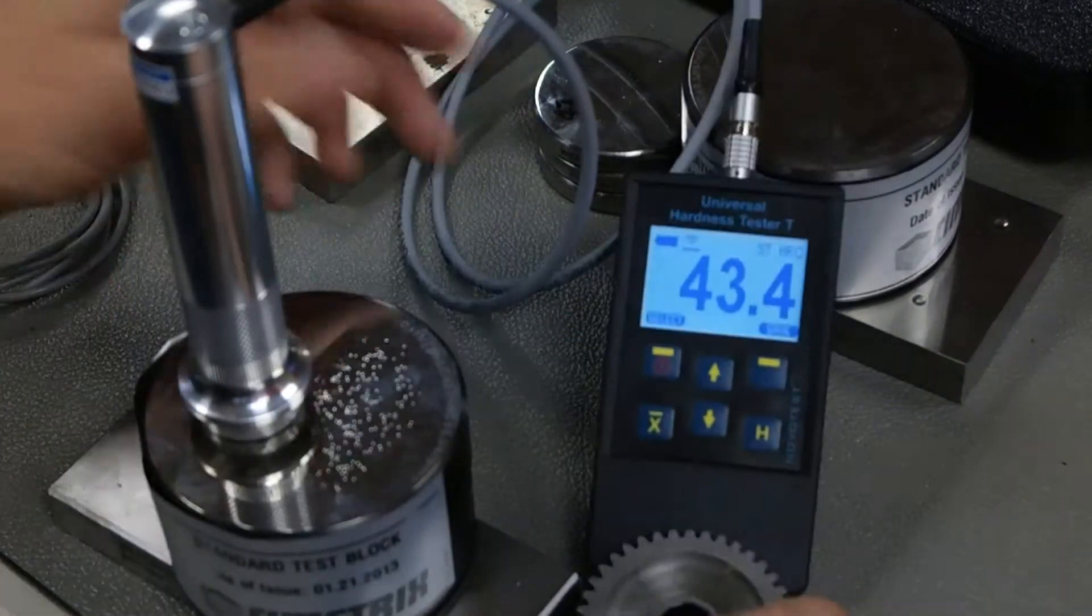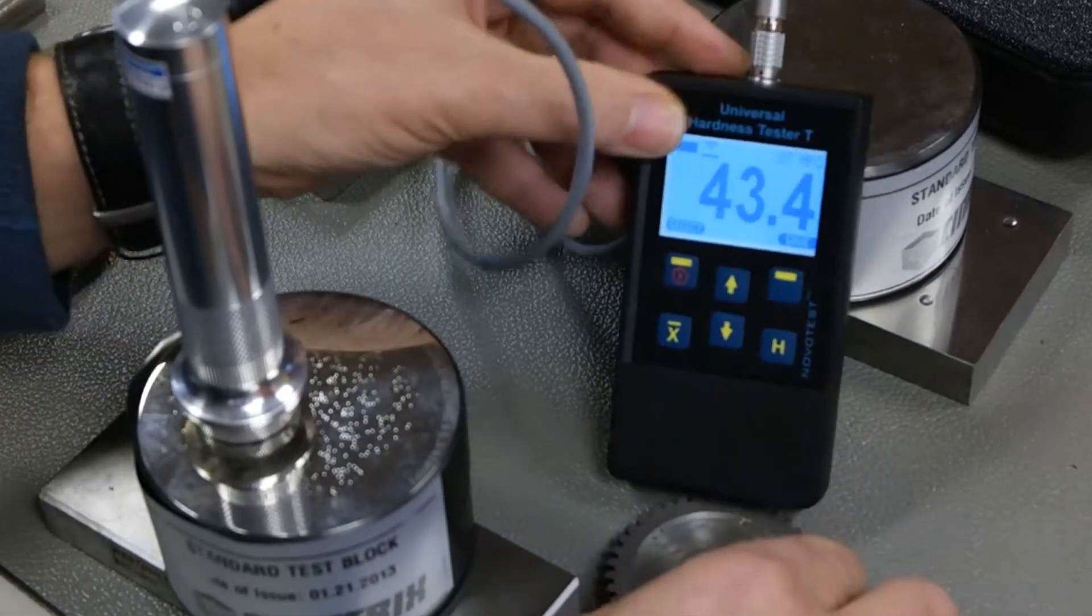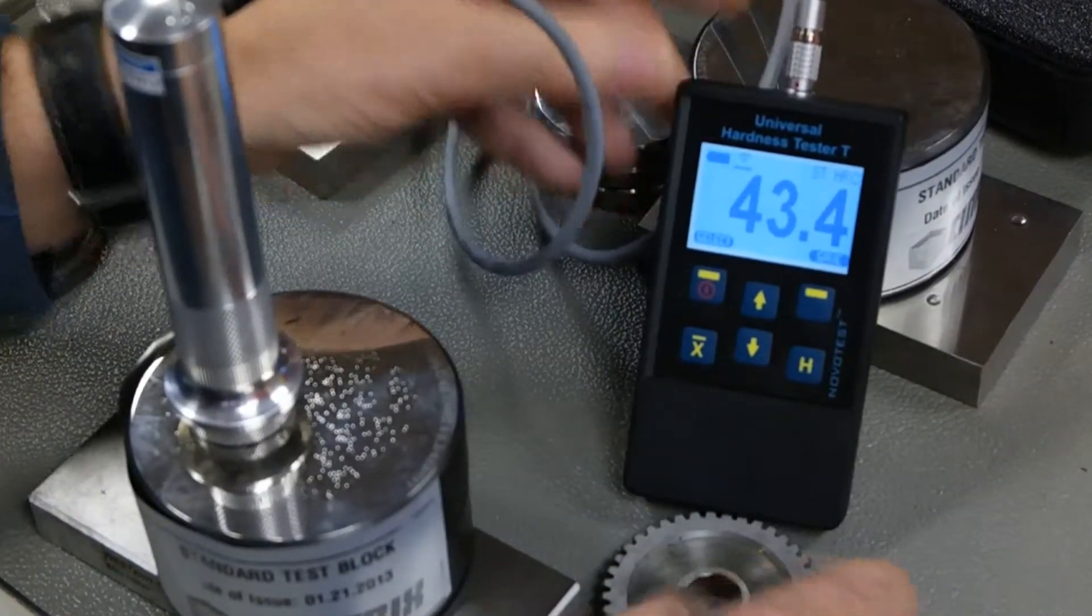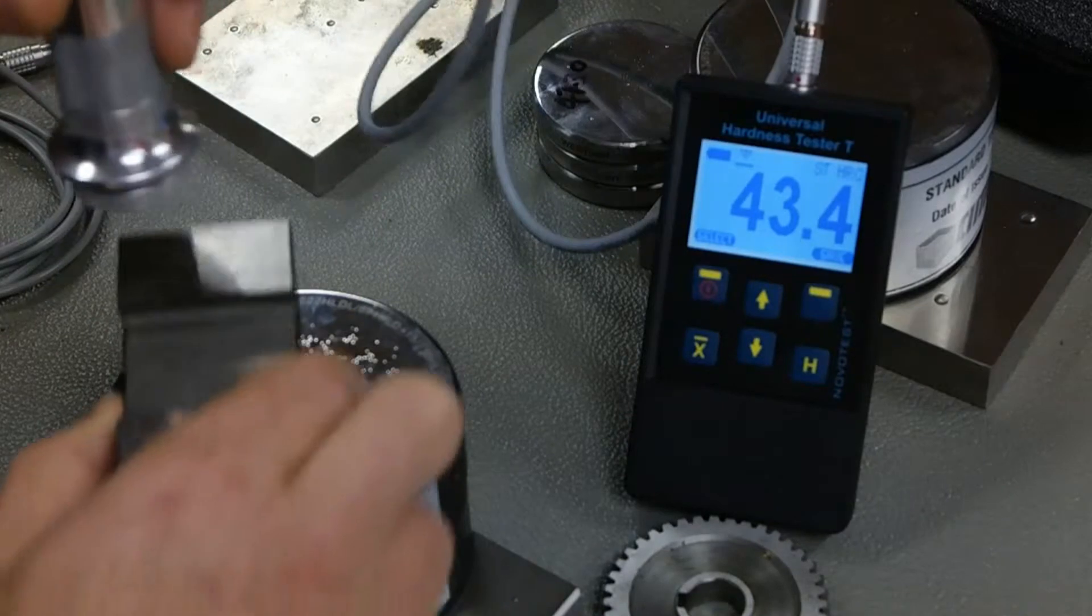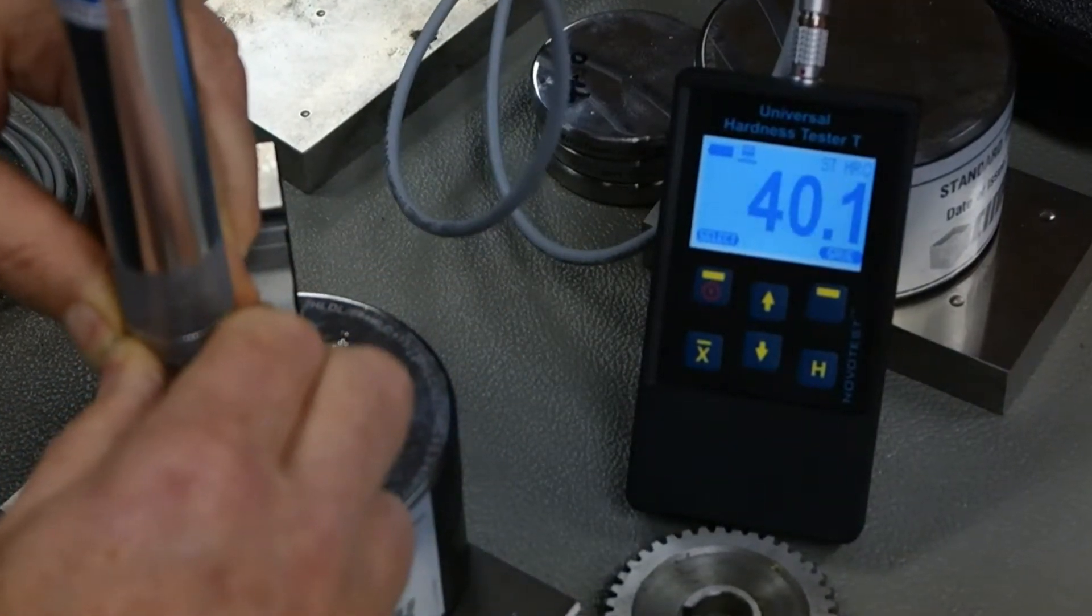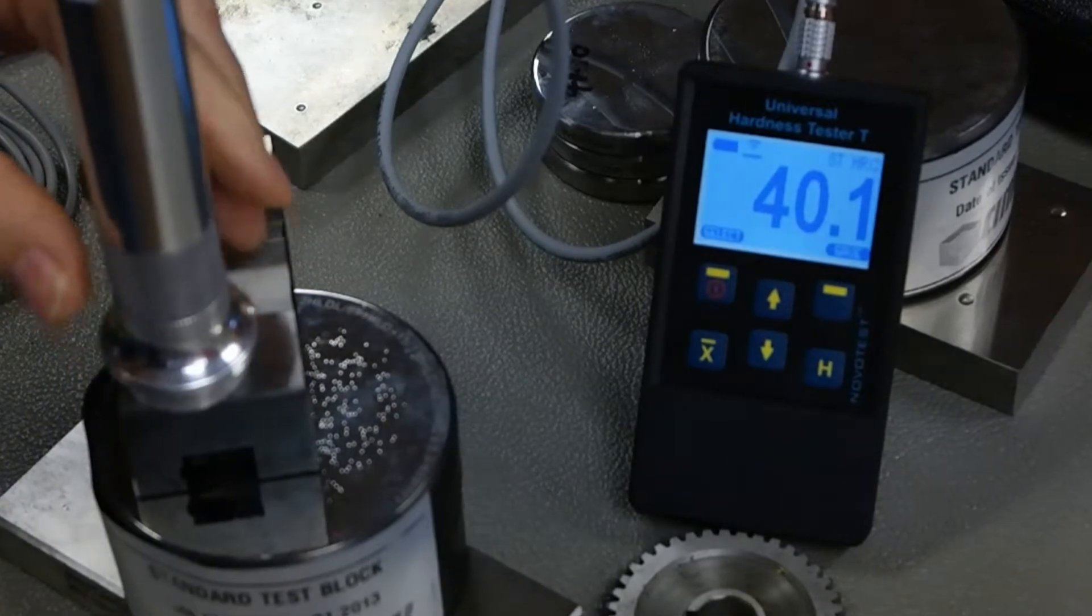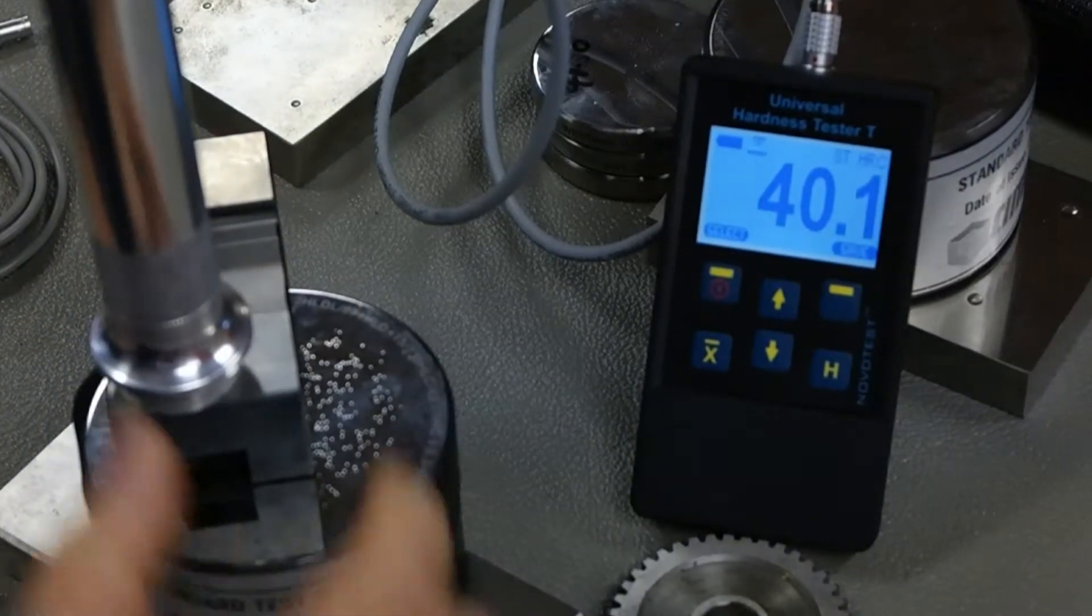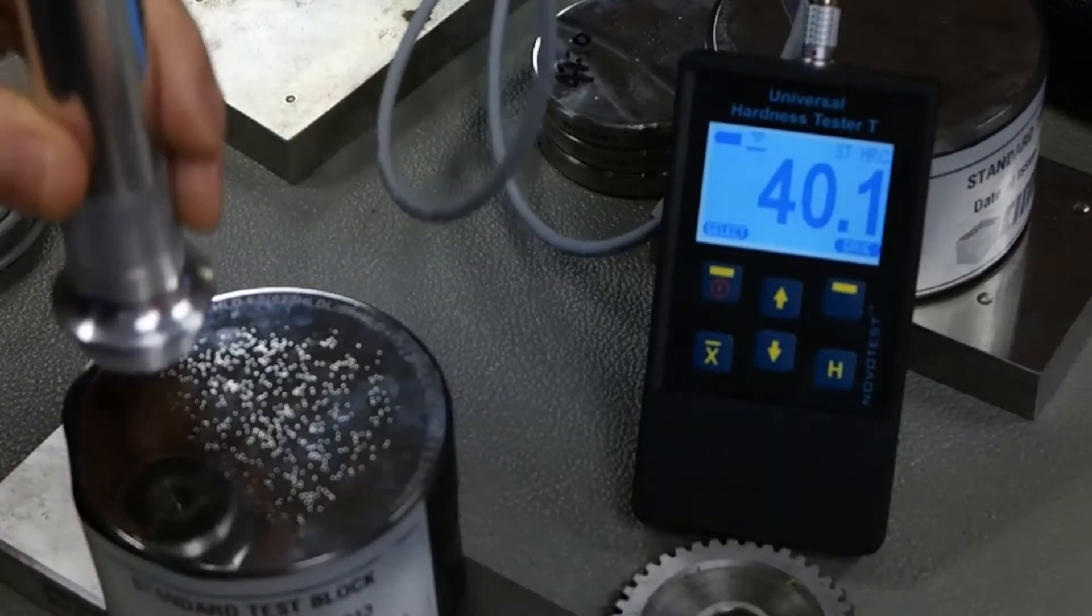But if I bring up a different material here that I know is softer, and say I did an erratic test on this by moving around, the value will be automatically rejected from the totals. Very nice little feature of the unit.